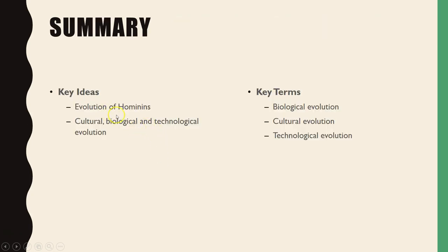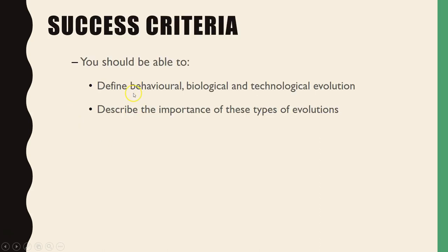So these are the key ideas: the evolution of hominins, understanding what humans began with, and how cultural, biological, and technological evolution fit into the picture of human evolution. You should now be able to define behavioural, biological, technological, and cultural evolution, and describe the importance of these types of evolutions and how they interplay with the success of the human race. Thanks for watching.